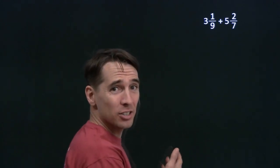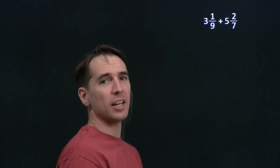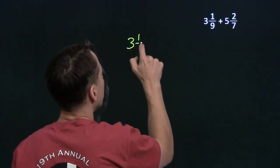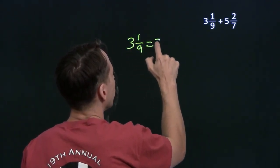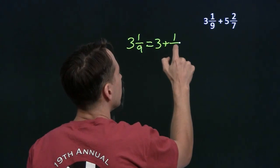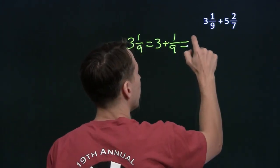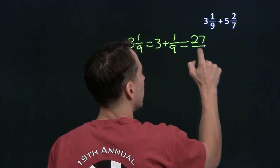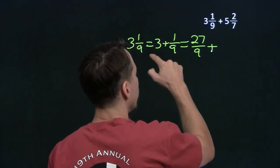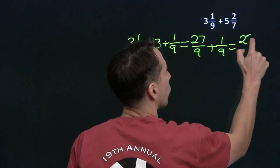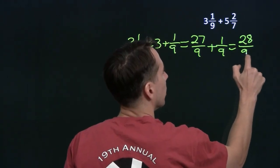Now we know how to add fractions, so if we just turn these mixed numbers into fractions, we should be all set. We'll start with 3 and 1 ninth. 3 and 1 ninth is just 3 plus 1 ninth, and we can add these, make a single fraction by getting a common denominator. 27 over 9 is 3, plus 1 over 9, and that gives us 28 over 9.